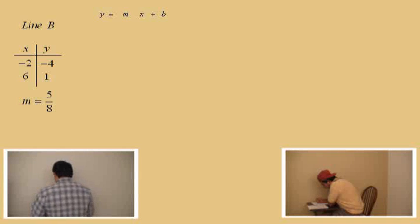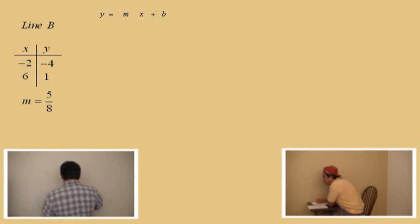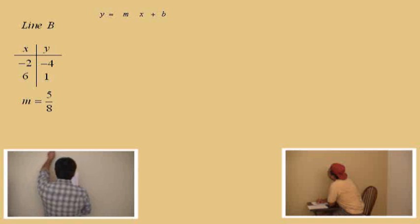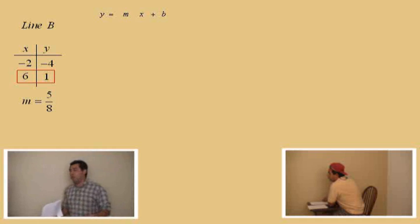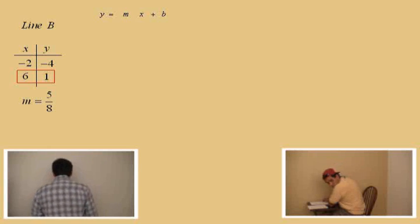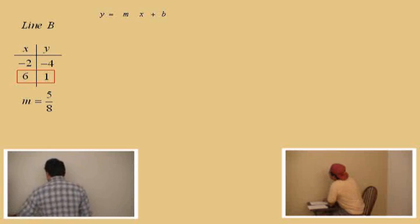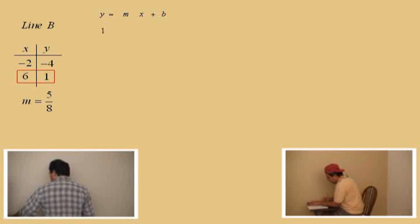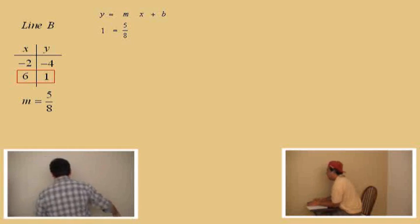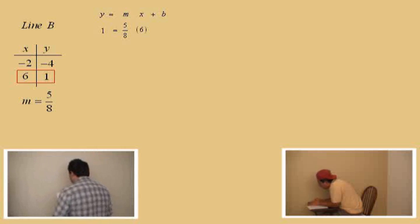Charlie, there's our slope-intercept formula. Now, in order to do this, we've got to pick a point. We're going to pick the point 6 comma 1, Charlie. It doesn't matter which point you choose — you could choose negative 2 comma negative 4, or 6 comma 1. I'm going to choose 6 comma 1; I like to have the numbers positive. So, y equals mx plus b: what's our y value? 1. What's our slope? Five-eighths. What's the x value? 6. Then we bring down our b.